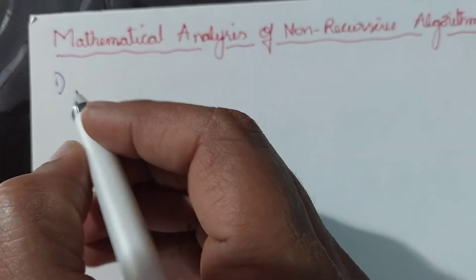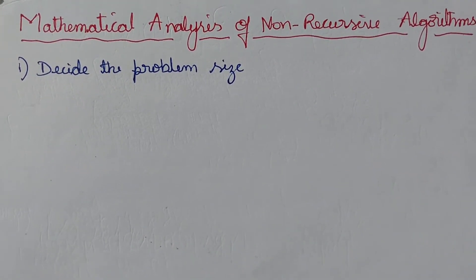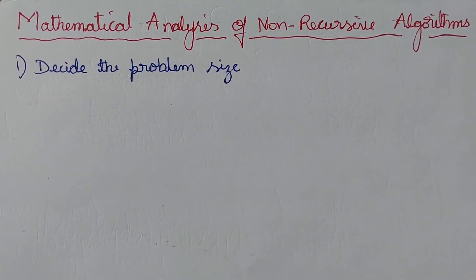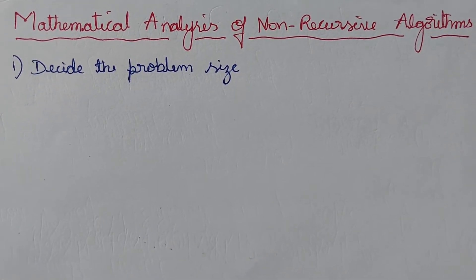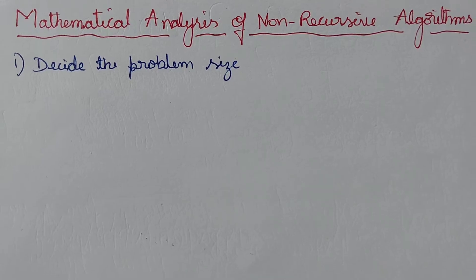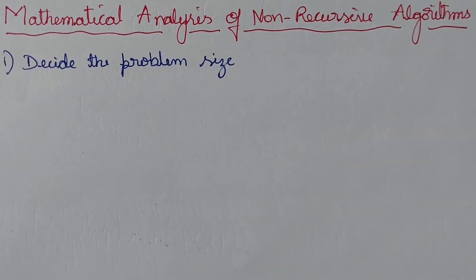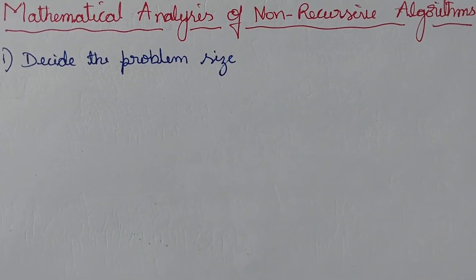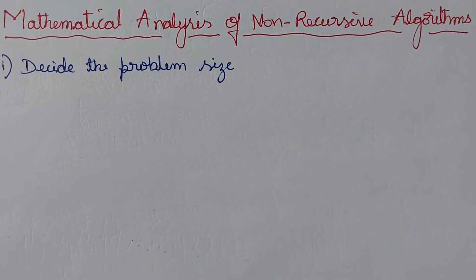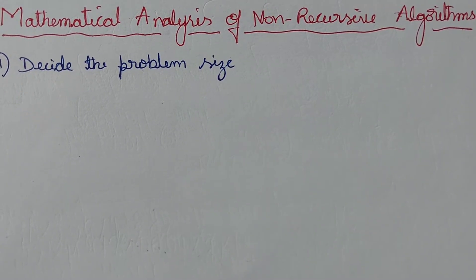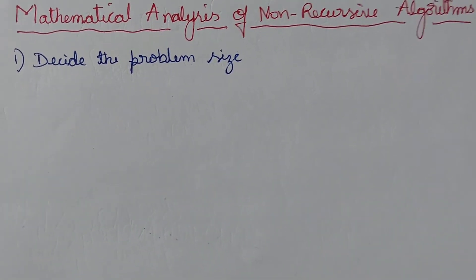The first step is to identify the problem size — decide what the problem size is. Problem size is nothing but how many number of inputs our algorithm is working on. For example, if we write an algorithm to add two numbers, the problem size is two. If we write an algorithm to sort elements, the number of elements we are sorting is the problem size.